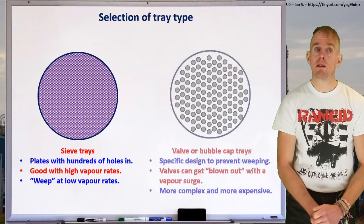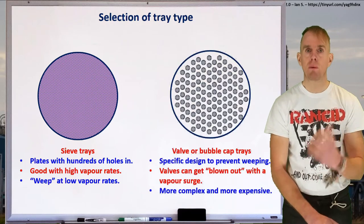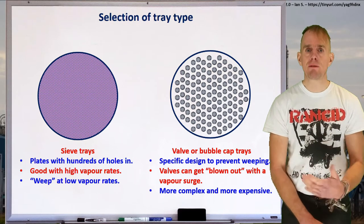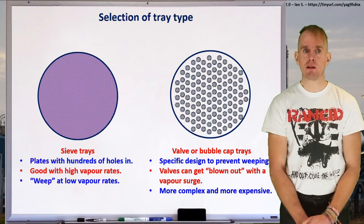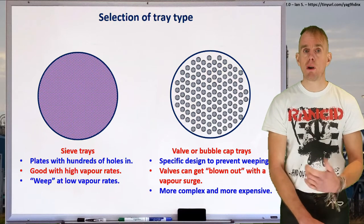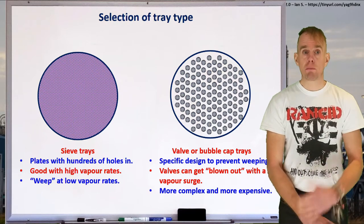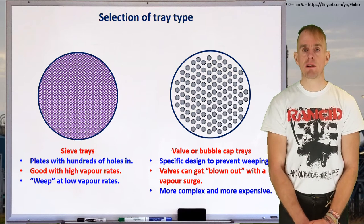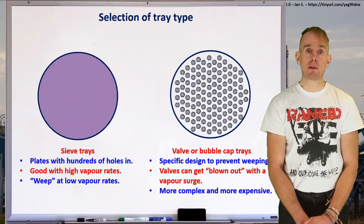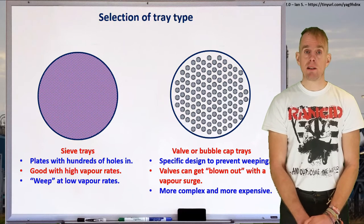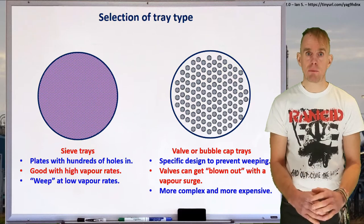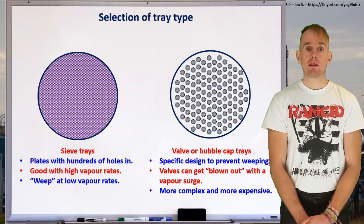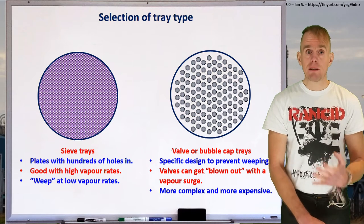Sieve trays are good, cheap, and robust, but they do weep at low vapor flow rates. If you're dealing with low vapor flow rates, you need to prevent liquid from draining through those holes. There are many different designs of tray that allow you to do that, including valve trays or bubble cap trays. These are more expensive, slightly more complex, and can go wrong — if you have a vapor surge through a distillation column, you can quite easily blow the valves out of a valve tray.